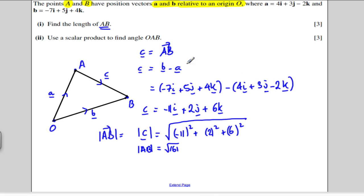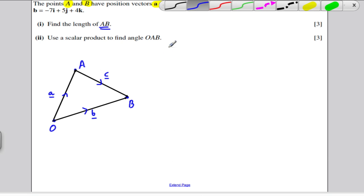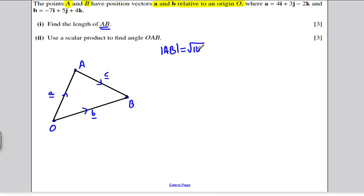Now I'm going to do the next part. I'm just going to leave my diagram up there for now. My diagram is as follows. And I know that the distance AB, I've said, is the square root of 161. Now, use the scalar product to find the angle OAB. That is the angle at A. So this angle here, I want to find that angle there.